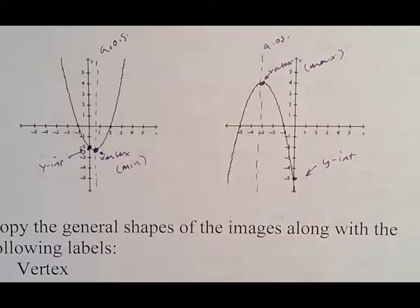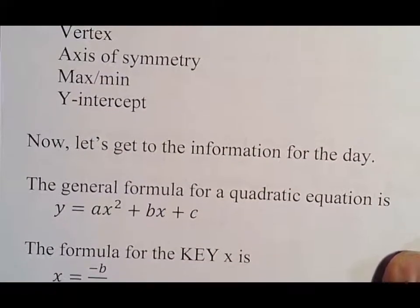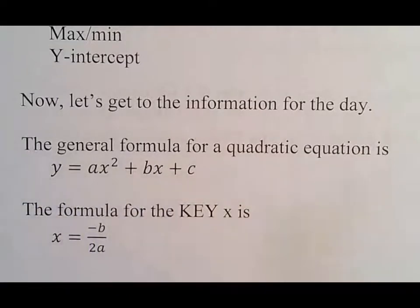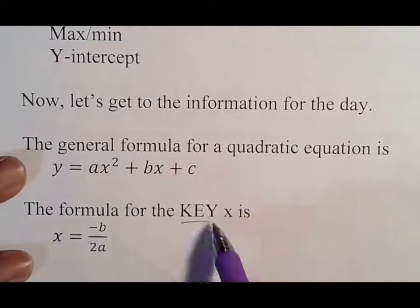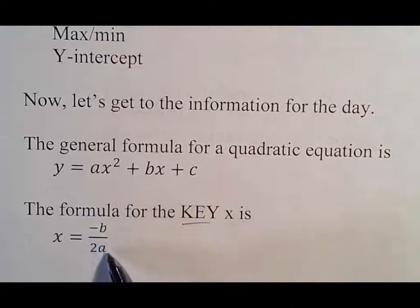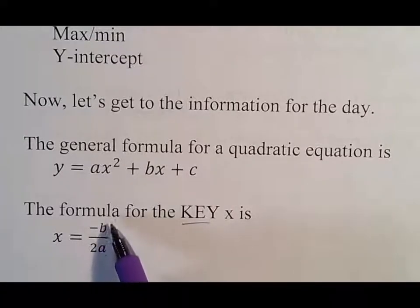So let's go ahead and get to the information for the day. The general formula for a quadratic equation is this — write that down. The formula for the key X — and I say it's the key because think about a key: if you want to go out of town, you need the key to start the car, to lock your door, to do anything. You need the key. So the key X is X equals negative B over 2A.